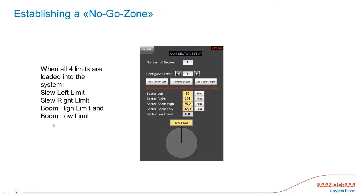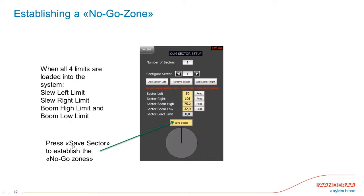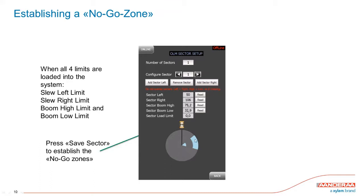One no-go zone is defined by four angles: two slew angles and two boom angles. There is also a fifth parameter — the Sector Load Limit — which means a sector can be valid only when the load exceeds a certain value. For instance, entering four tons means the sector is only active if the hook load exceeds four tons; otherwise it's valid for all operations. When done, press 'Save Sector.' The saved sector is shown on the map in light blue, indicating the no-go area both below and above the defined angles.